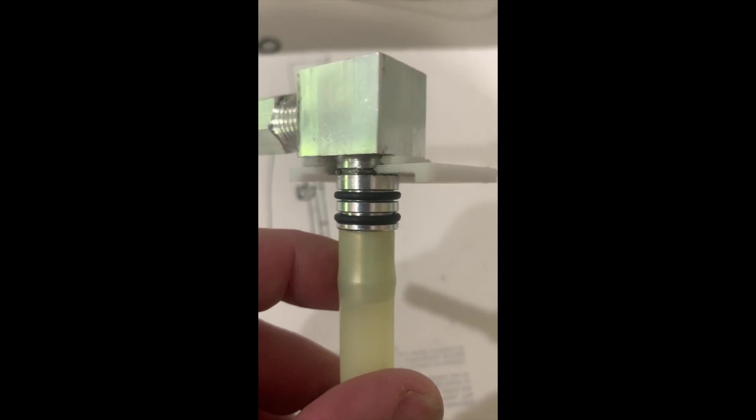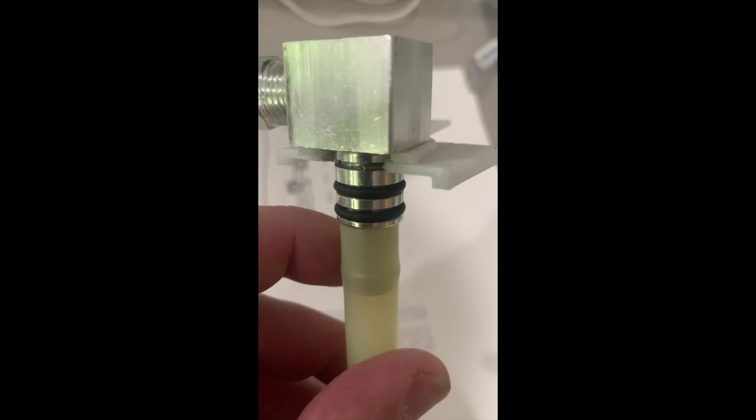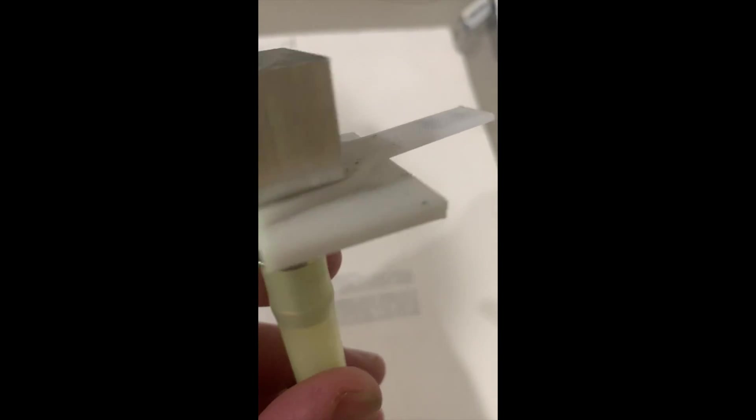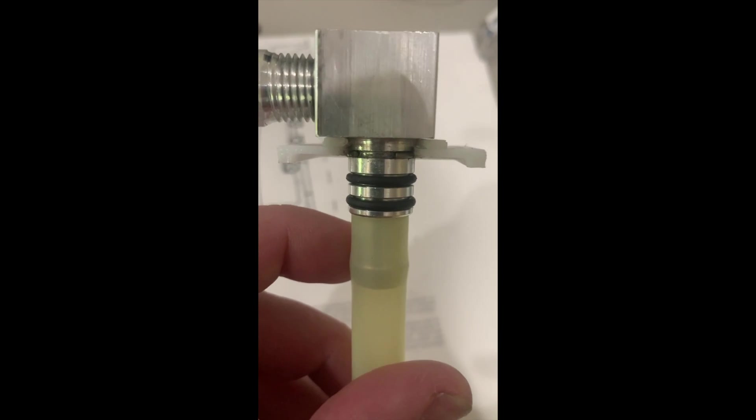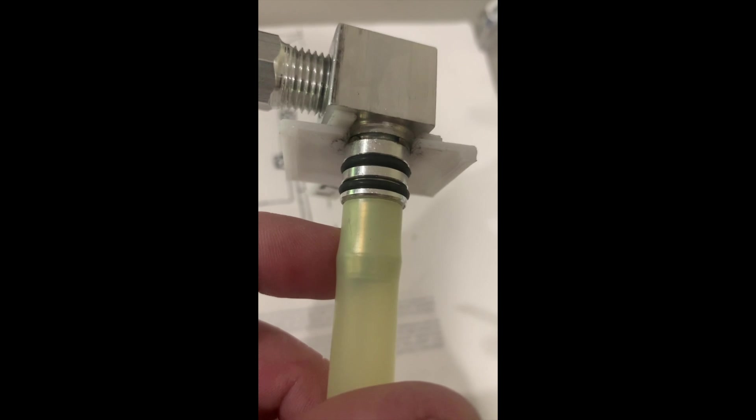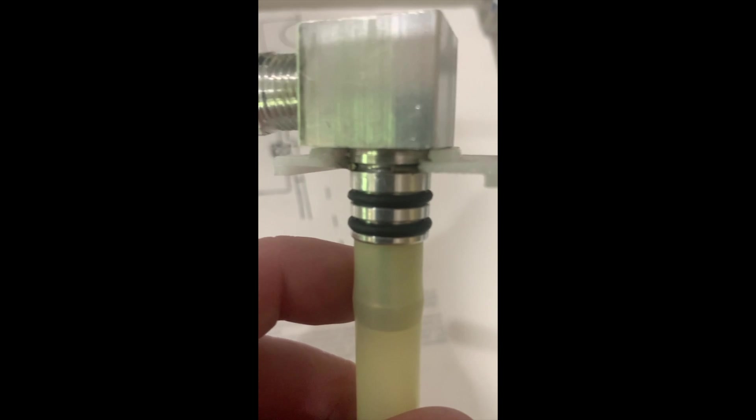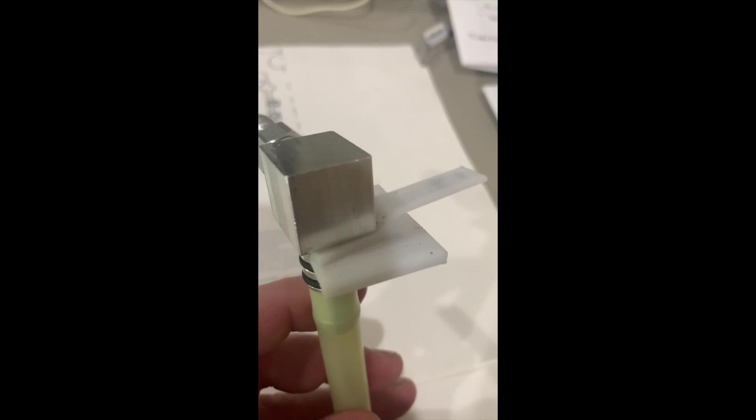The solution I came up with was I 3D printed a two-part tool system. One was a spacer that you can see up on top with a pull tab, and the other is a ring compressor. You can see now that the ring is squeezed together and pretty much meets the diameter. You do all this above deck.